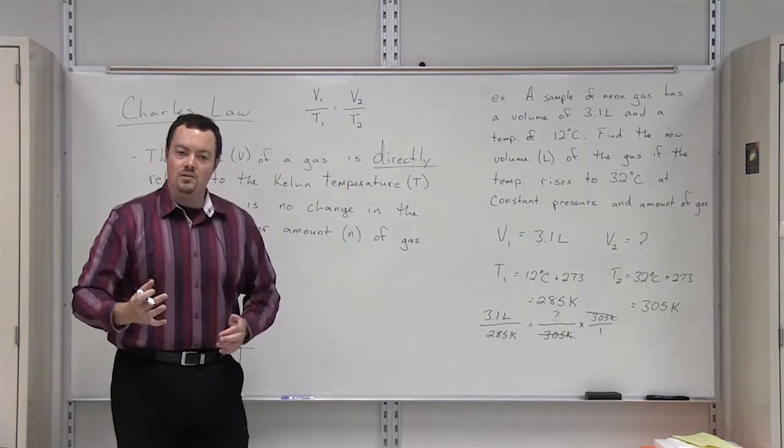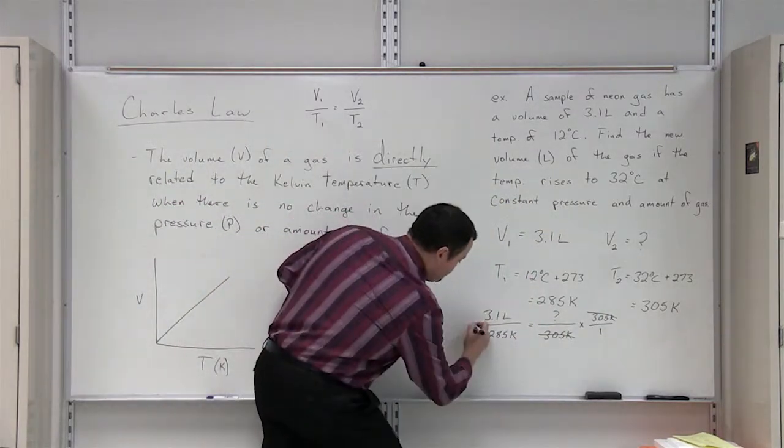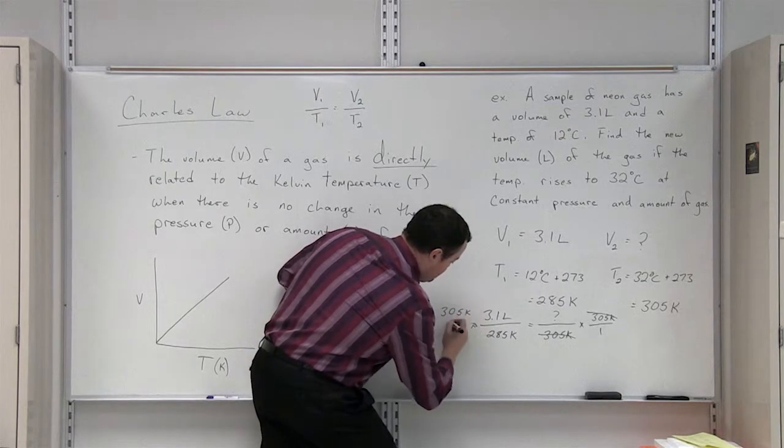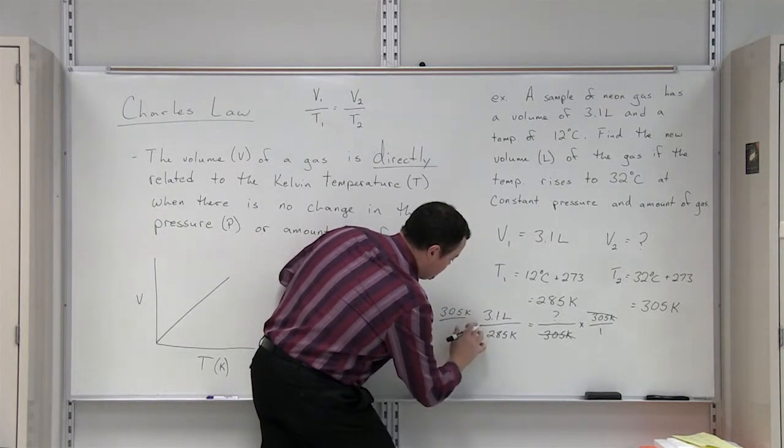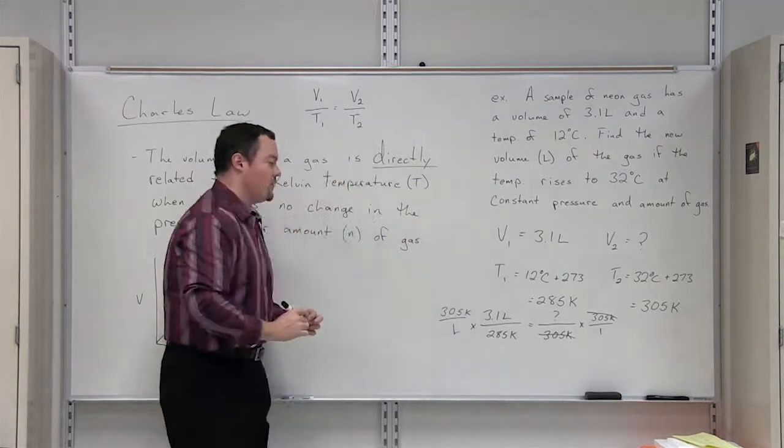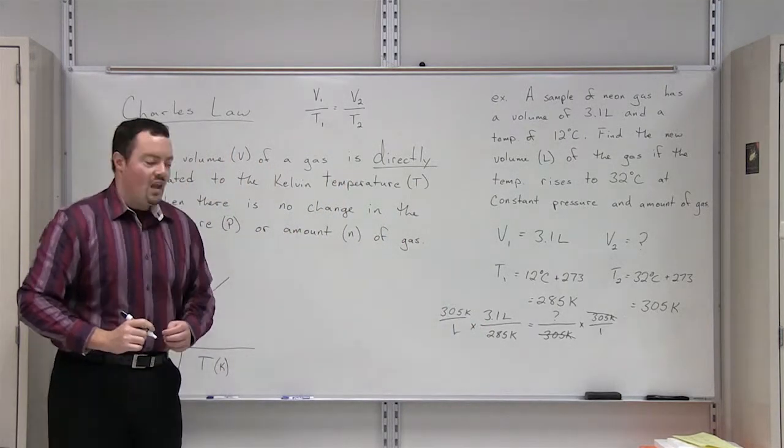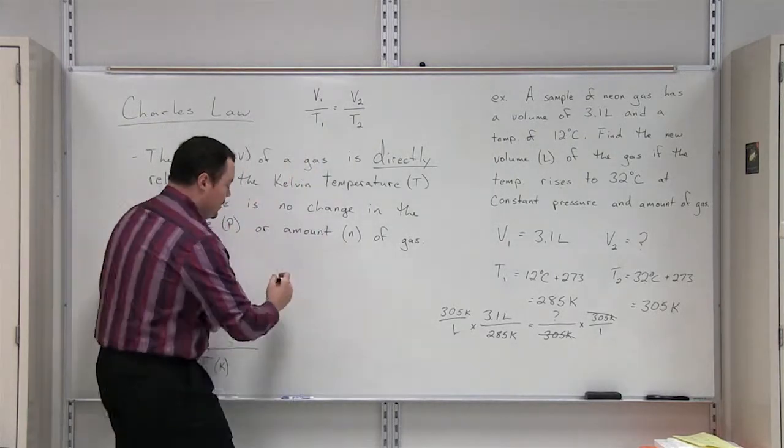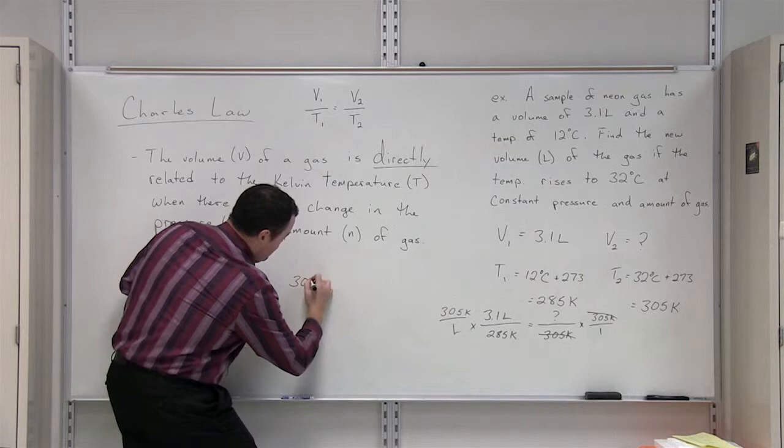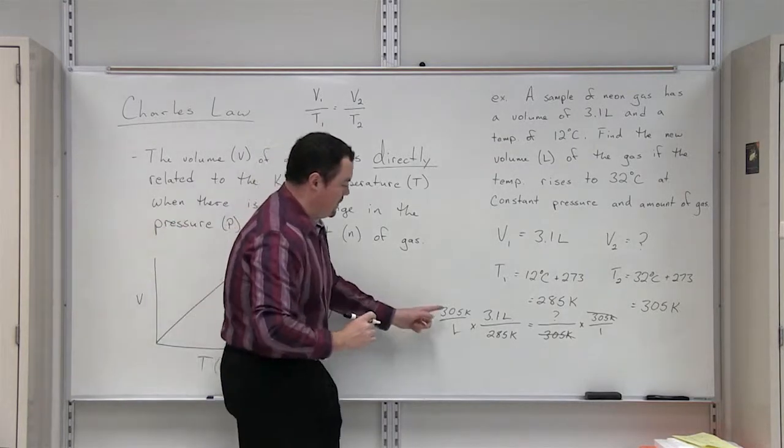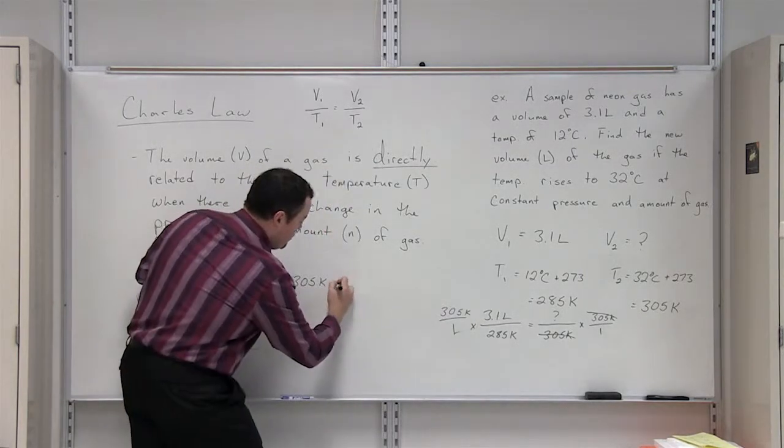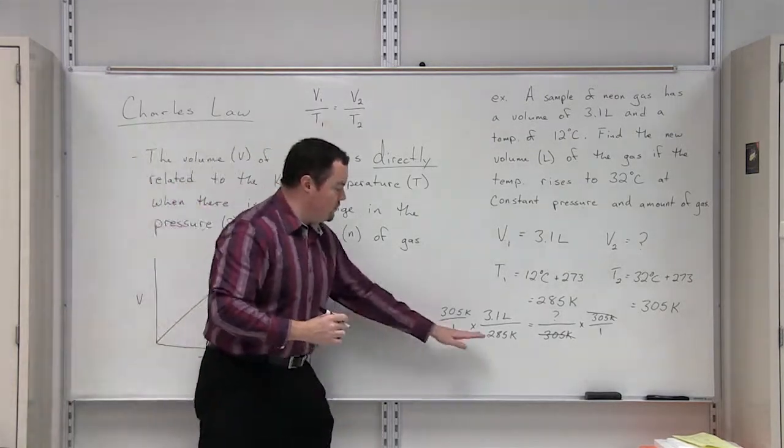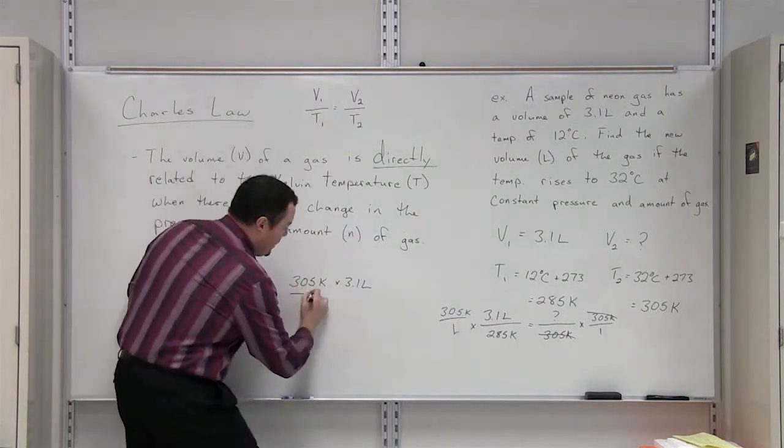What we do to one side of the equal sign, we have to do the other side. Our formula to solve for V2 is going to look like this: 305 Kelvin multiplied by 3.1 liter, we're going to divide those by 285 Kelvin.